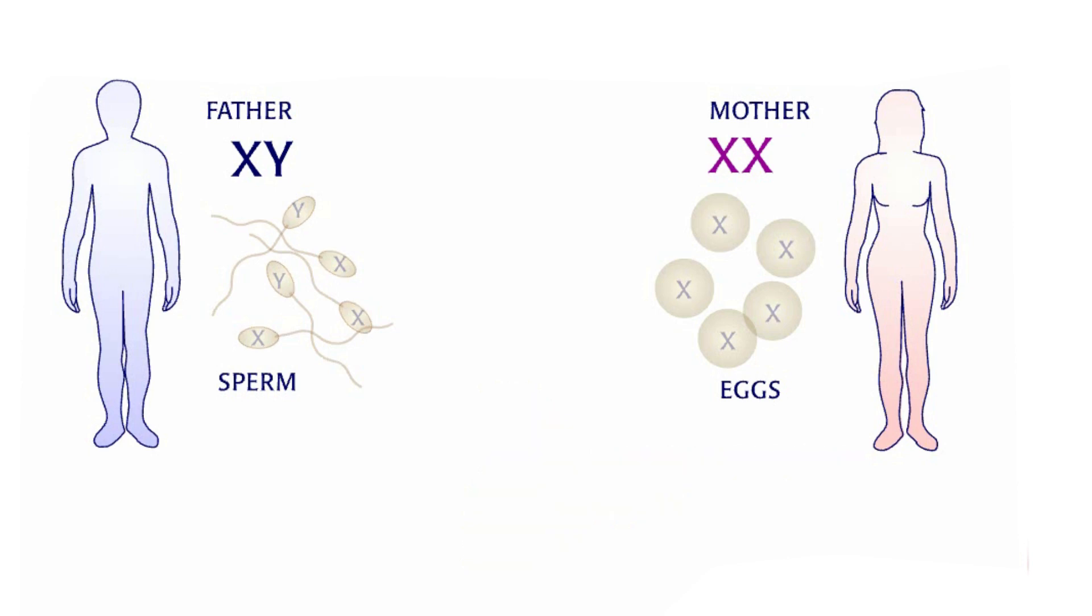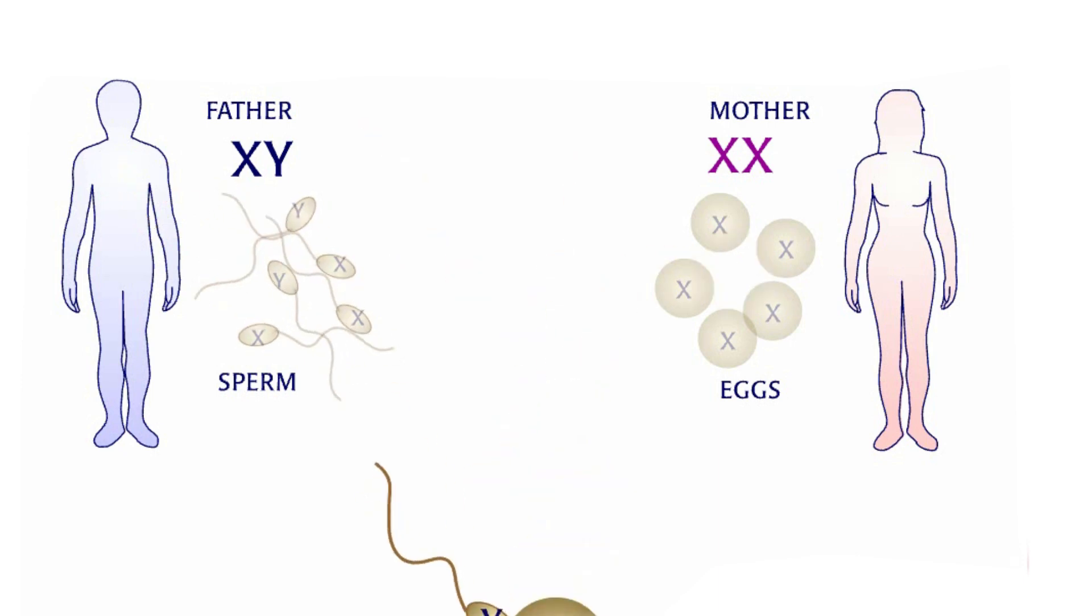This happens if the gene mutates in the mother's eggs or if the gene mutates early in the boy's embryonic development. About one-third of boys get Duchenne this way.